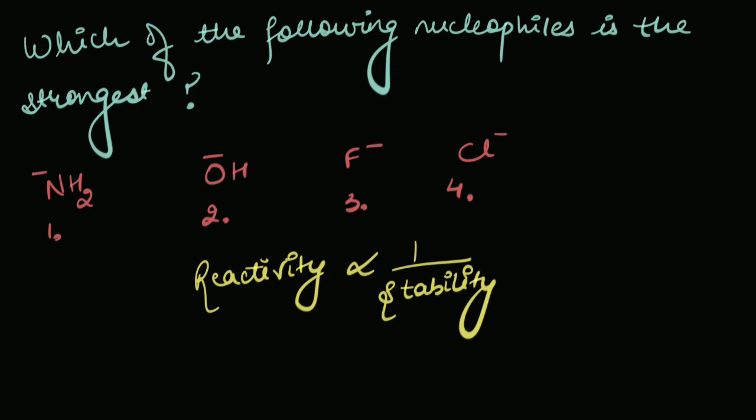Great! So all we have to do is compare the stabilities of these four ions. And the one that's the least stable would be the strongest nucleophile, or we can say it would be the most reactive nucleophile, right? And how do we compare the stability of anions?